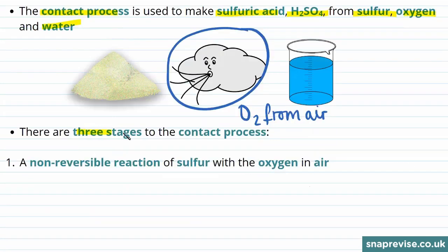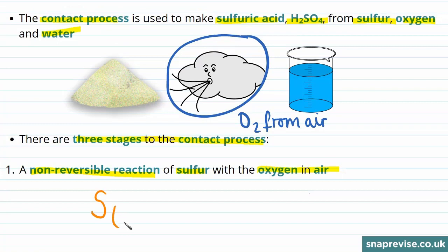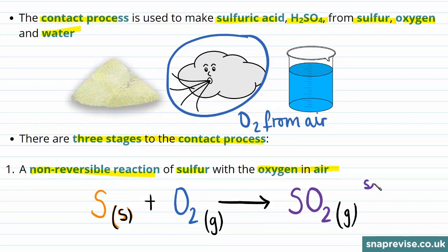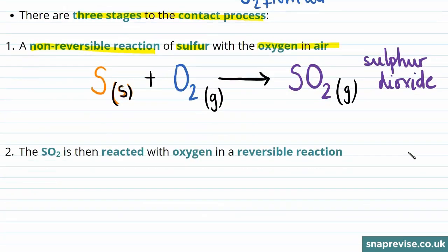The contact process happens in three steps. The first is a non-reversible reaction between sulfur and oxygen present in the air. In this step, one atom of sulfur, which exists naturally as a yellow powder and is therefore a solid, reacts with one molecule of oxygen, O2, from the air. This non-reversible reaction produces one molecule of sulfur dioxide, SO2. Sulfur is a solid, while oxygen and sulfur dioxide are gases. This sulfur dioxide product then goes on to react further.